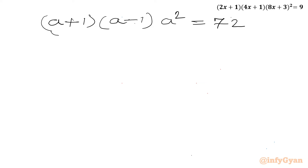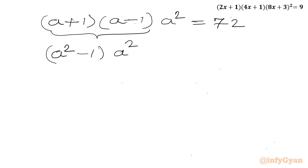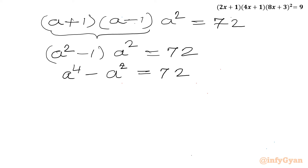Using the (A+B)(A−B) identity, (a+1)(a−1) = a²−1. So the equation becomes (a²−1)(a²) = 72, which expands to a⁴ − a² = 72, or a⁴ − a² − 72 = 0.